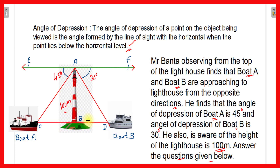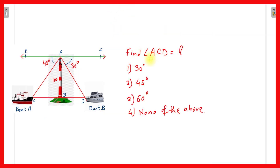The first question asks us to find angle ACD. We know the horizontal line CD is parallel to sea level EF. Since these two lines are parallel and the line of sight is a transversal, the alternate interior angles are equal. Therefore, if the angle of depression is 45 degrees, angle ACD is also 45 degrees. The correct answer is the second option.